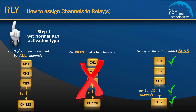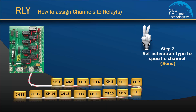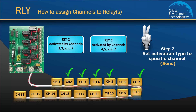In this exercise, we want to assign specific channels to Relay 2 and Relay 5. To do this, we need to set the activation type for Relay 2 and Relay 5 to Sends, and then assign channels 2, 3, and 7 to Relay 2, and assign channels 4, 5, and 7 to Relay 5.